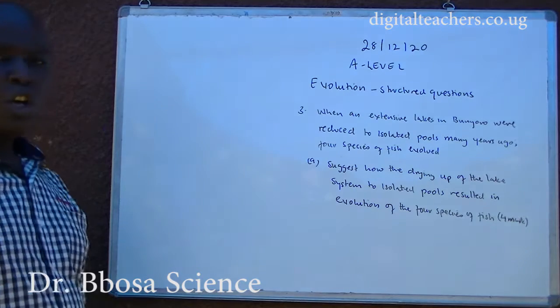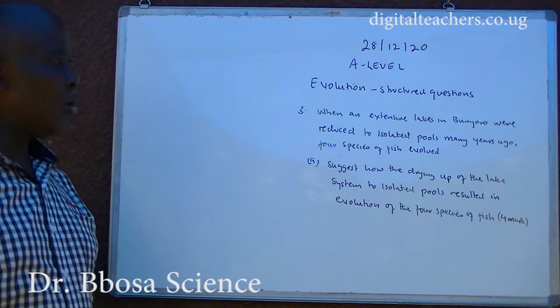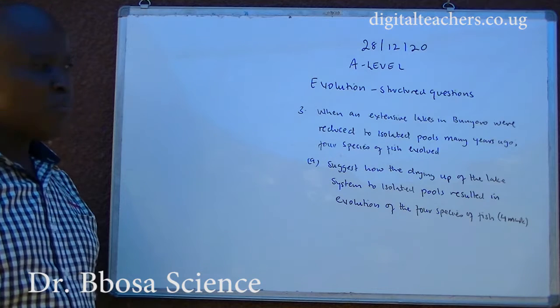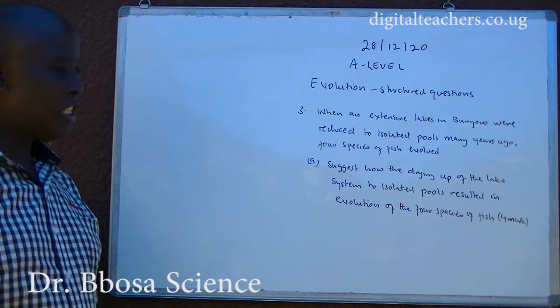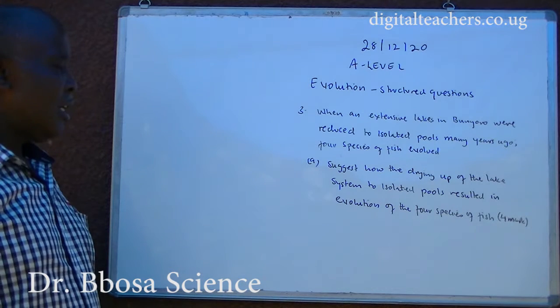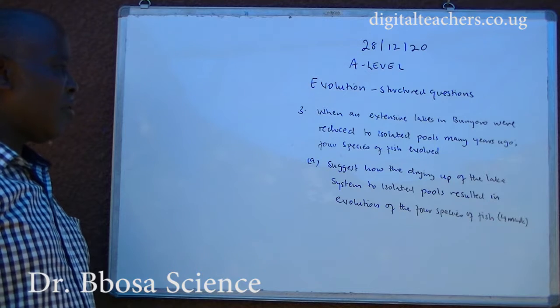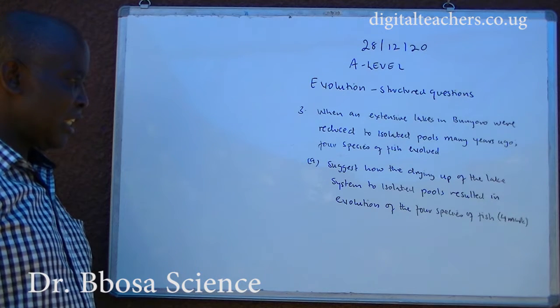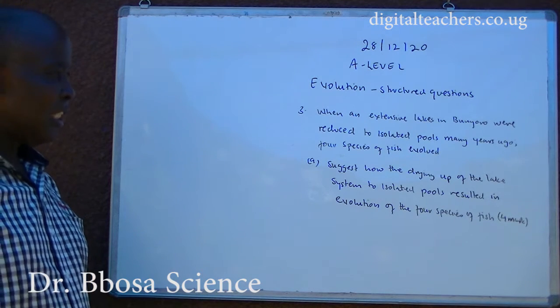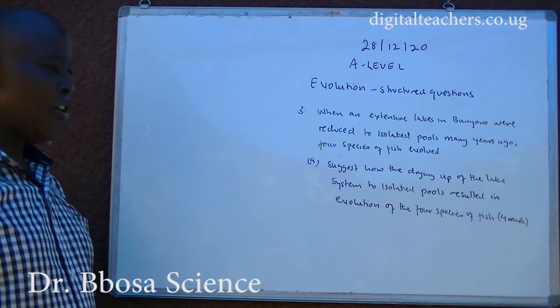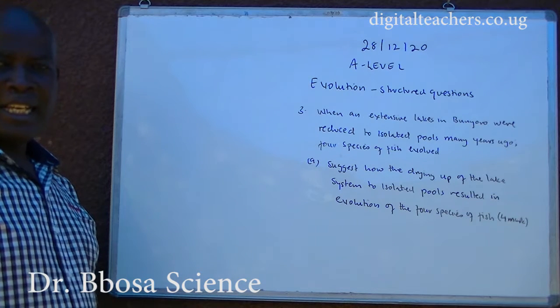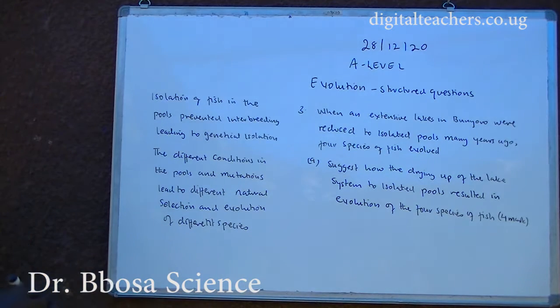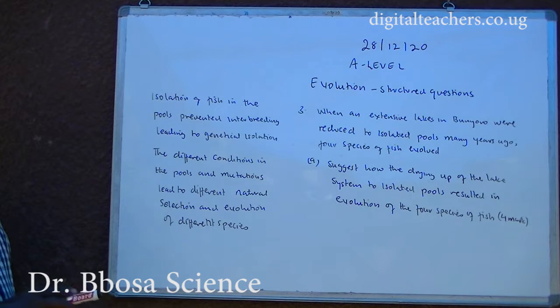Number three, when extensive lakes in the Winyolo were reduced to isolated pools many years ago, four species of fish evolved. A. Suggest how the drying up of the lake system to isolated pools resulted in evolution of the four species of fish. You can pause and answer.